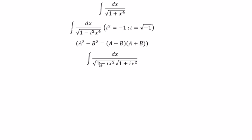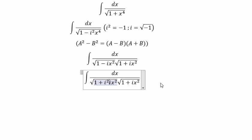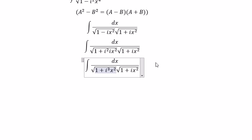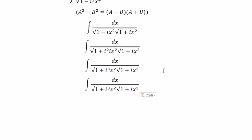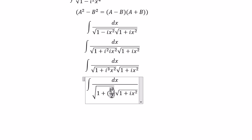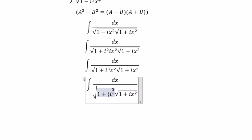We do similarly for the negative term. i squared multiplied with i gives i to the power of 3. So we put inside the square root that should be i to the power of 3 over 2, multiplied with s, everything to the power of 2.